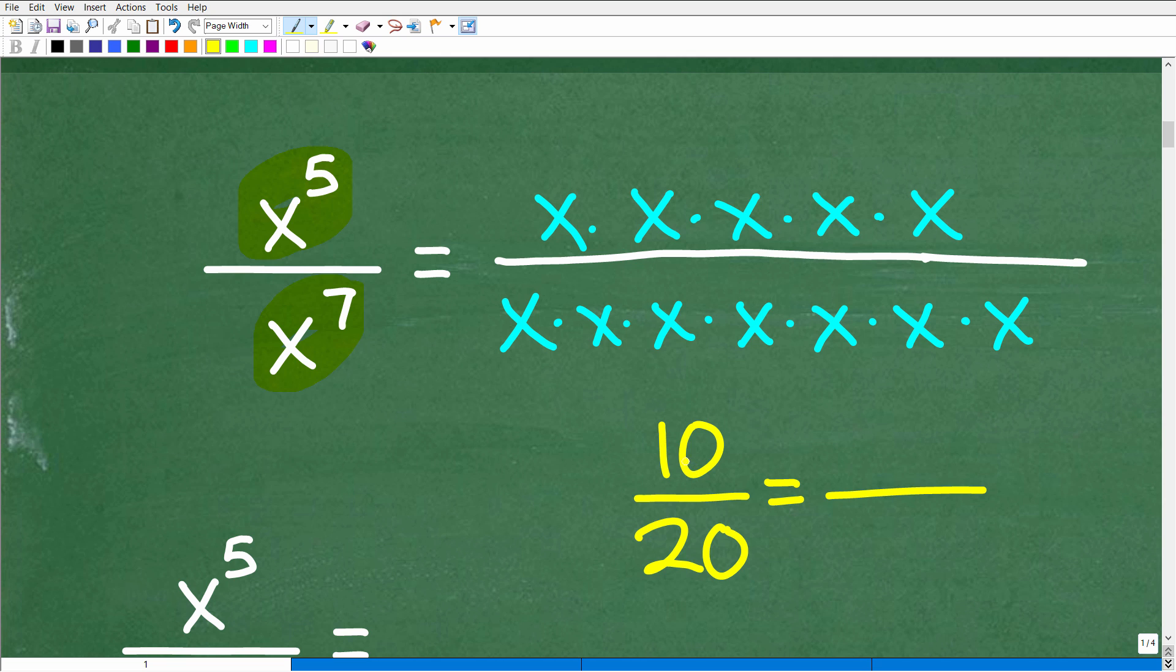And 20 is the same thing as two times 10. So in math, if you have common factors in the numerator and denominator, like right here, we can cross cancel those, those can go away, and we're left with the answer one half. So 10 over 20 is equal to one half. So what we're looking for is common factors in the numerator and denominator. The numerator is the top part of a fraction and the denominator is the bottom part.